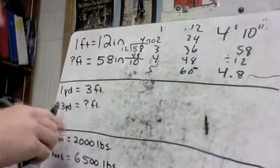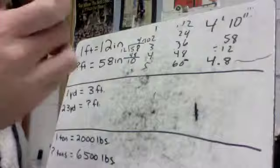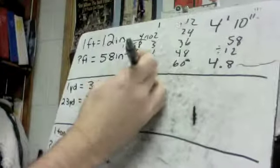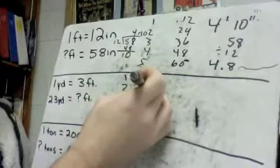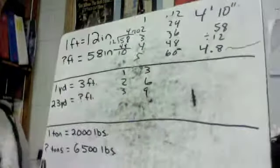Down at the bottom, this next one, one yard equals three feet, 23 yards equals how many feet? So I could do this. I could go one yard, three feet, two yards, six feet, three yards, nine feet, and just keep going on all day.